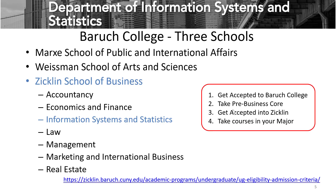A student who comes to Baruch College takes a set of courses called the Pre-Business Core. They then get accepted into the Zicklin School of Business, and from there, students can take the courses in their major. The URL here, which I will put in the description, gives you the set of steps to actually get into a major in the Zicklin School of Business.